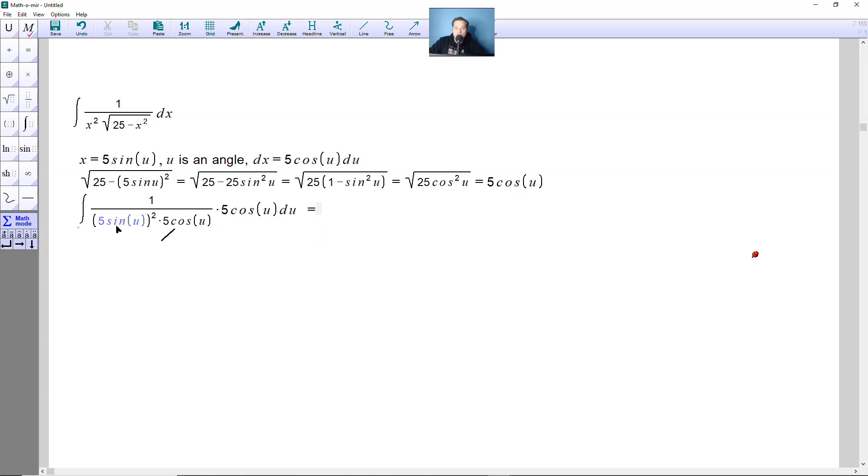And then you've got to also do 5 sine of u squared. So when you type that, it's going to look like the following at the next stage, essentially. 1 over 5 squared is 25 sine squared of u. And then here, it's going to be basically just du.